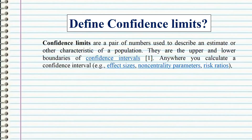Confidence limits are a pair of numbers used to describe an estimate or other characteristic of a population. They are the upper and lower boundaries of confidence intervals, calculated anywhere you compute a confidence interval — for example, effect sizes, non-centrality parameters, and risk ratios.